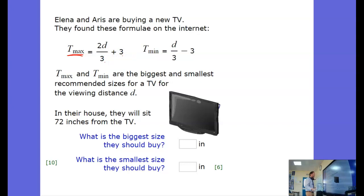What we need to know is that d is the distance from the TV. So, we are told they will sit 72 inches from a TV. We want to know the maximum and the minimum size of the TV in this case.